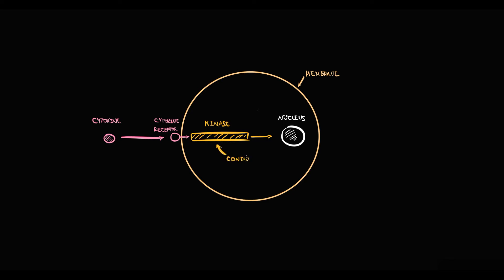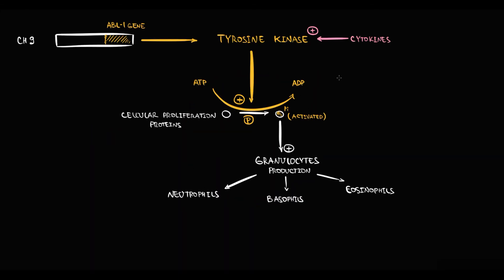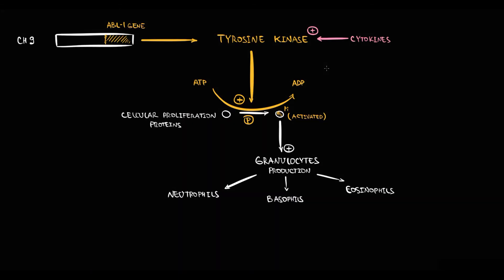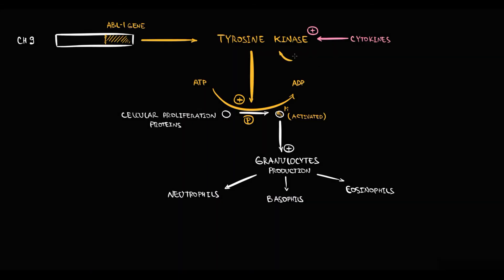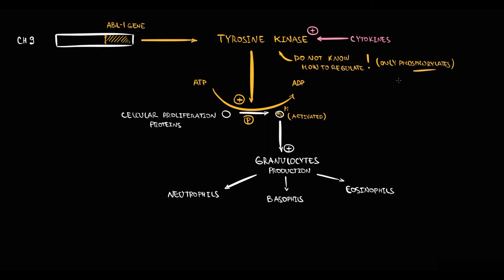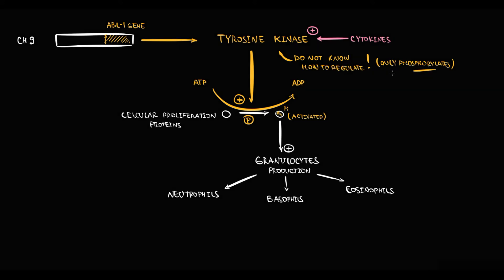In normal conditions, tyrosine kinase cannot decide to increase the mitotic rate or leave it as it is, because tyrosine kinase does not know how to regulate — this enzyme just acts. We can think of tyrosine kinase as a common factory worker: they do not know how the entire process works, but they certainly know they are part of the job.